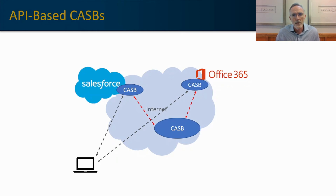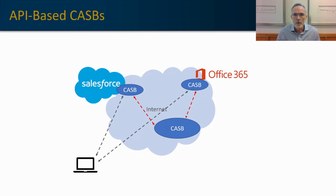One alternative is to use a CASB that offers both models and apply them selectively within your environment. You might choose the API model for standard business cloud environments and use the proxy model for more consumer-based cloud environments — like Dropbox or Gmail — where the customer experience impact may be less noticeable, the risk is higher, and you want real-time inspection. This way you can incorporate both deployment models to get the best of each.